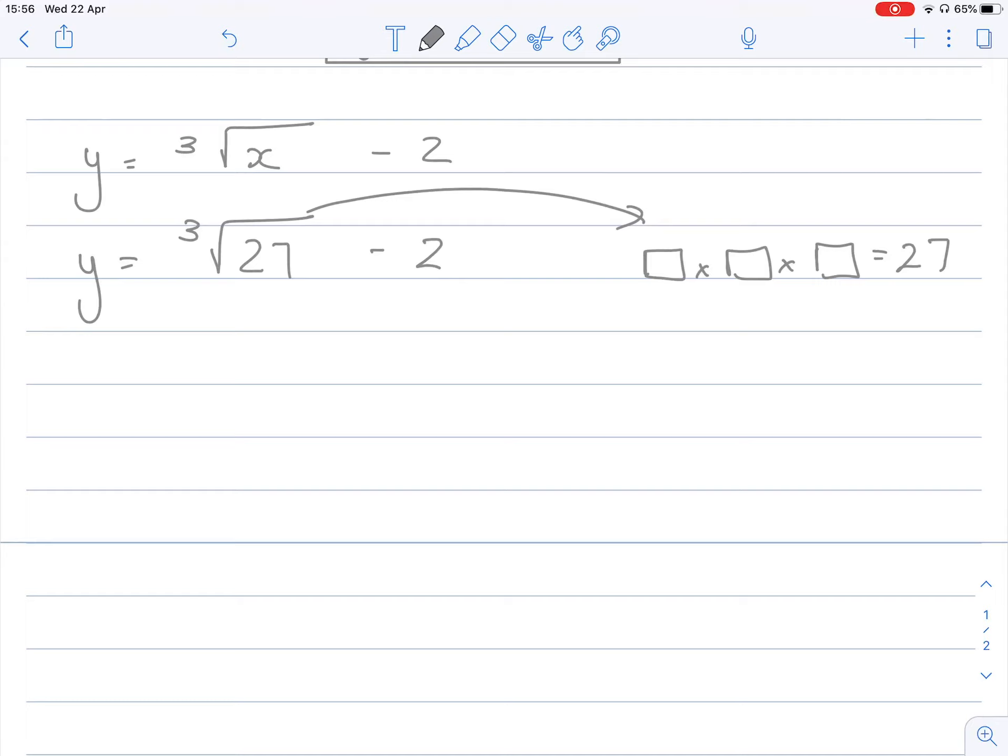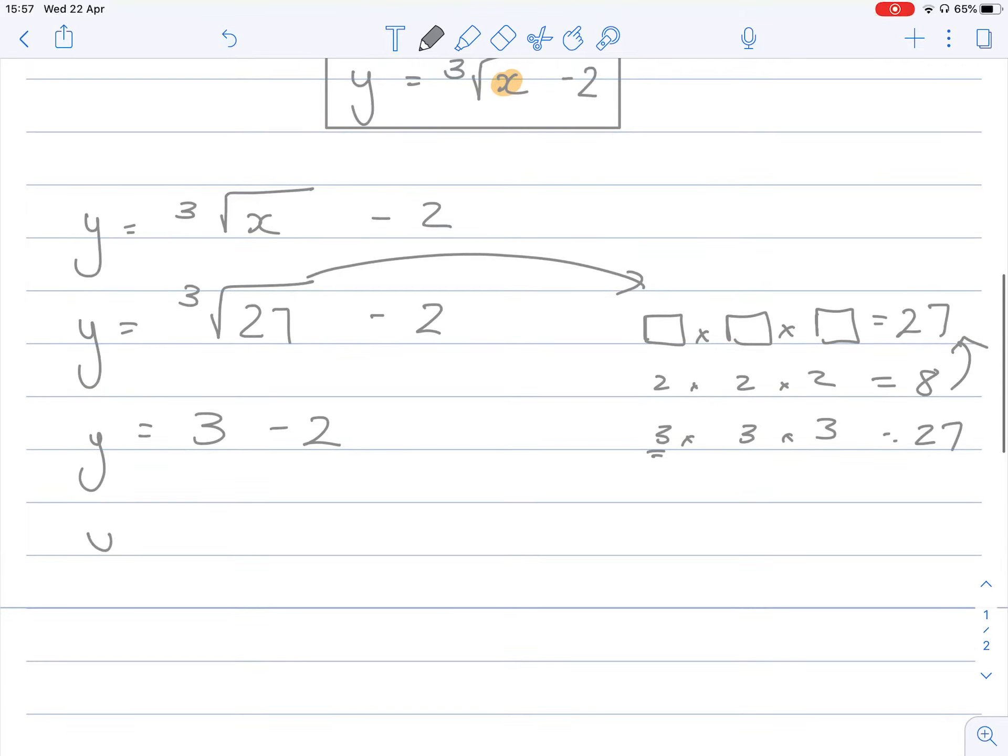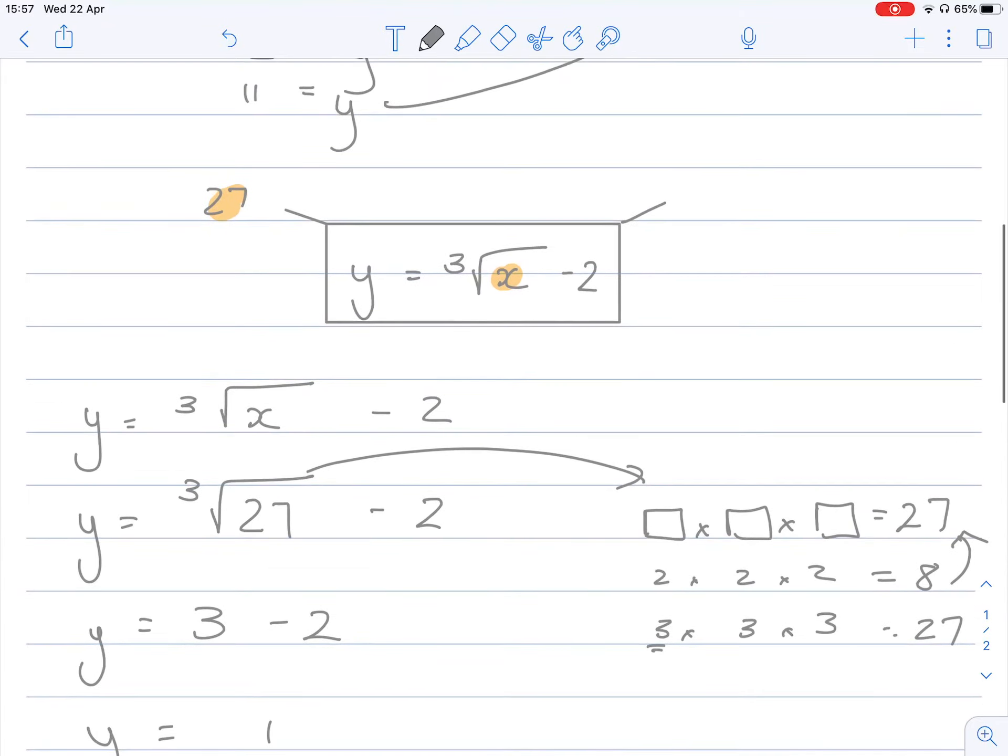So if I say two times two times two, two times two is four, four times two is eight. So that's not 27. So three times three times three, three times three is nine times three is 27. Therefore, three is your answer. So y is equal to three minus two. So y is equal to one. And that's how we solve that.